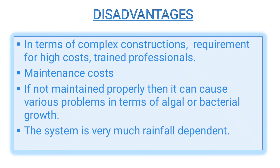What are the disadvantages? In terms of complex construction, there is a requirement for high cost and trained professionals. Second, maintenance cost may add to monetary burden, and if not maintained properly it can cause various problems in terms of algal or bacterial growth, which can affect the human body and cause different types of waterborne diseases. The system is very much rainfall-dependent, and hence if there is a problem in that area it may not be very effective.